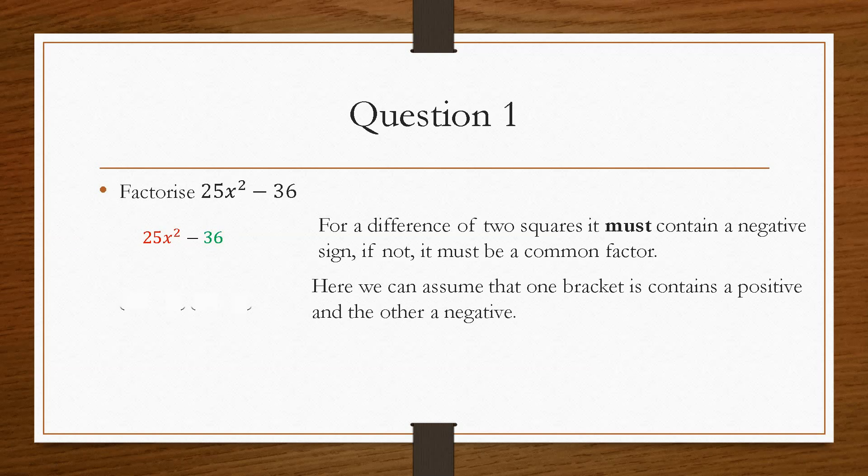So we can assume in a difference of two squares that one bracket is positive and the other bracket is negative. You can't do that with a trinomial. But for a difference of two squares, you can assume that one is positive and one is negative.